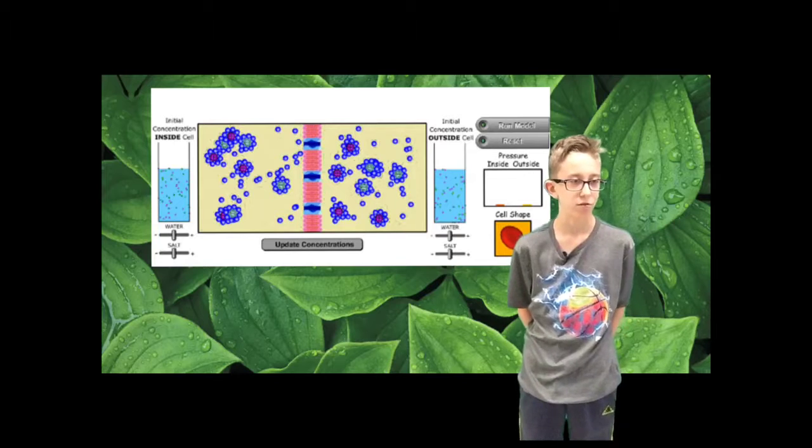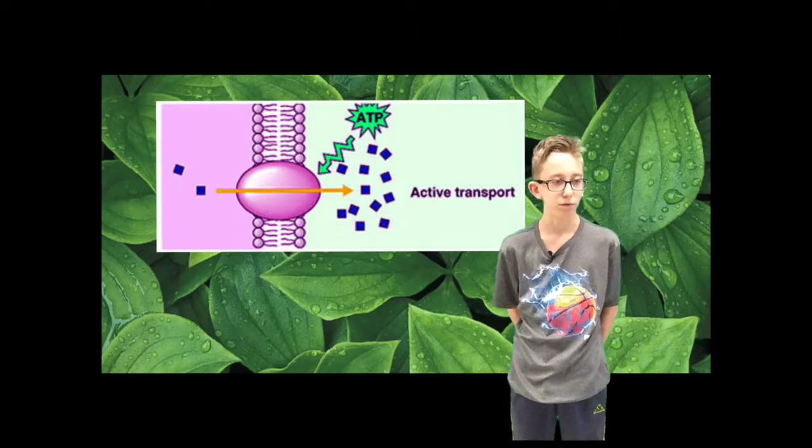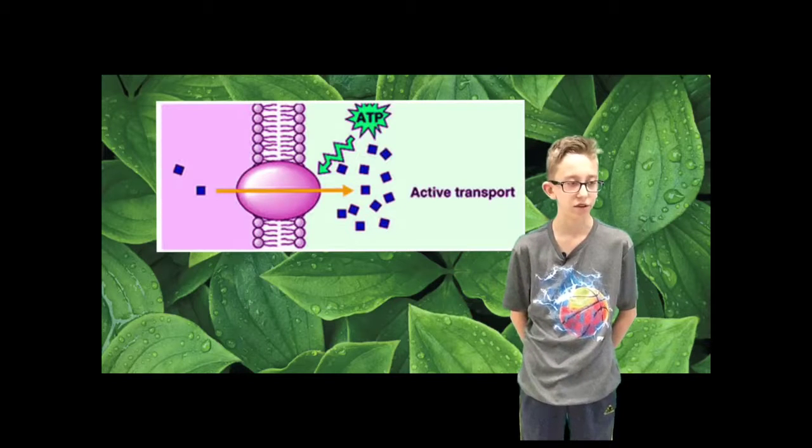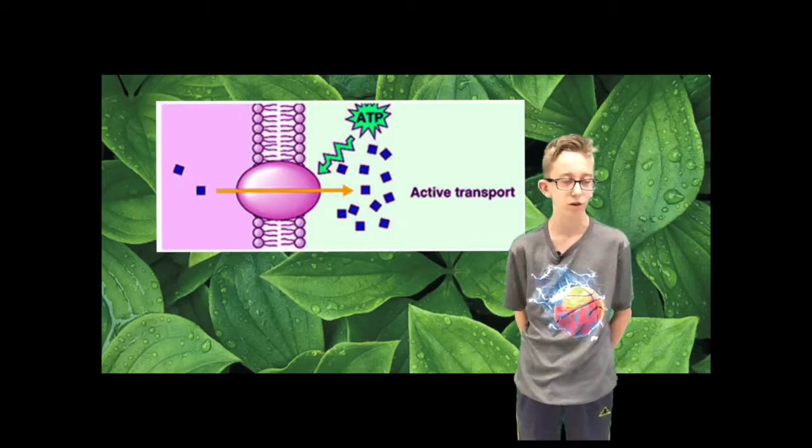Next, we'll be talking about active transport. Active transport is the movement of materials through a cell membrane using energy. Active transport can also be looked at as the downside of cells because it uses one of our hard-earned ATPs.